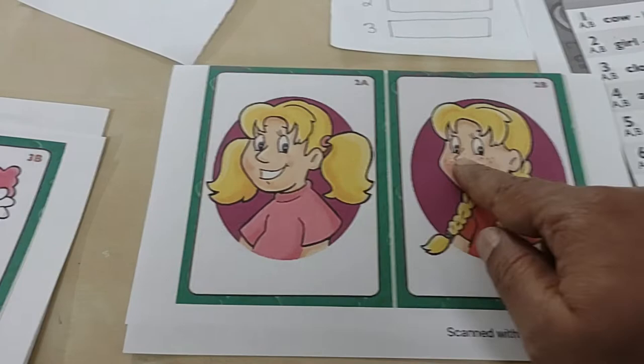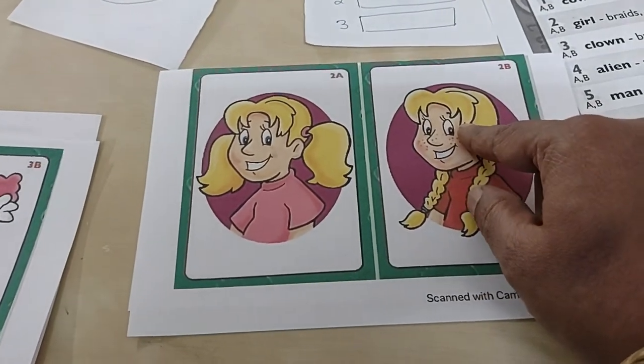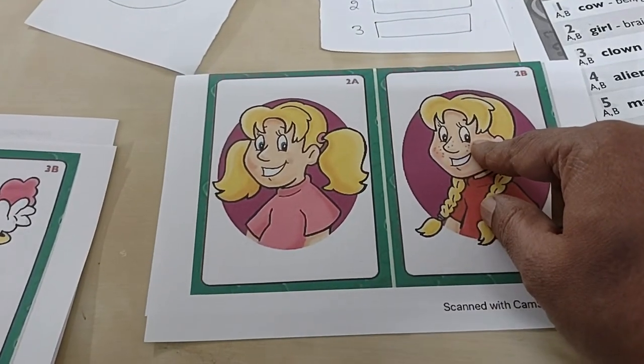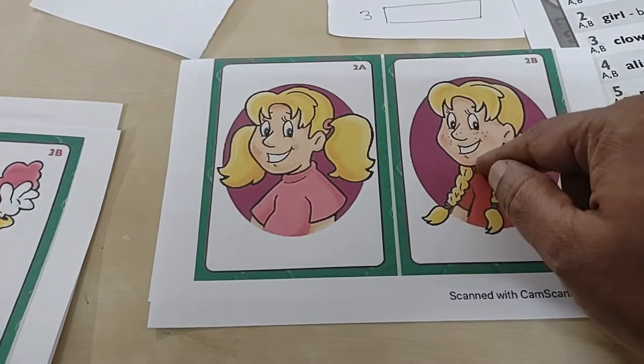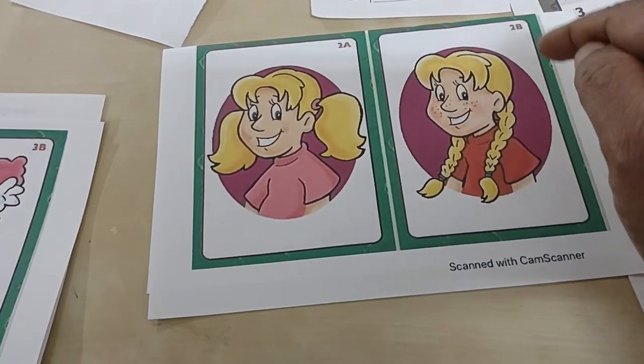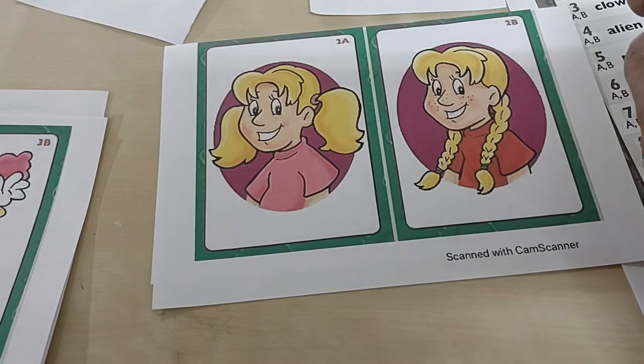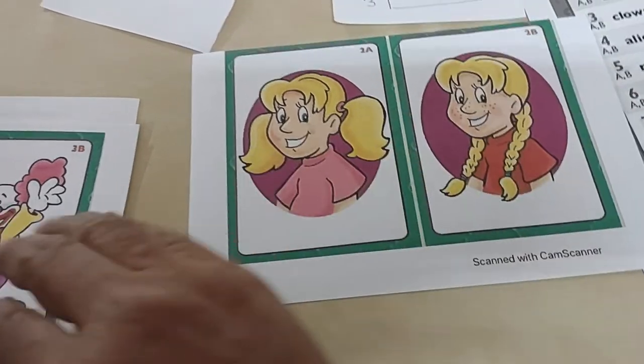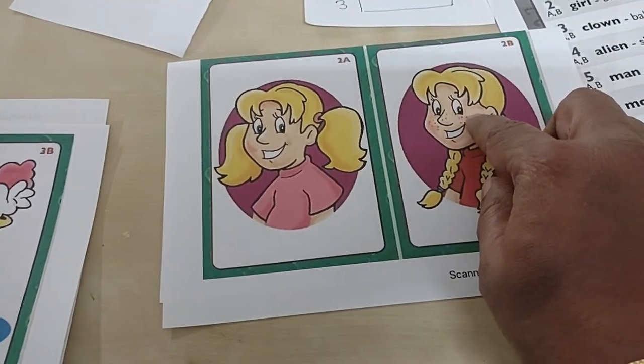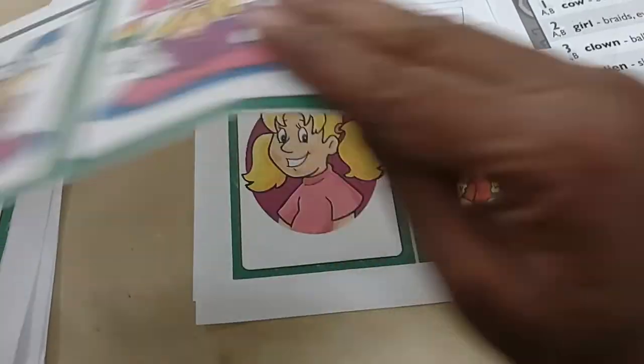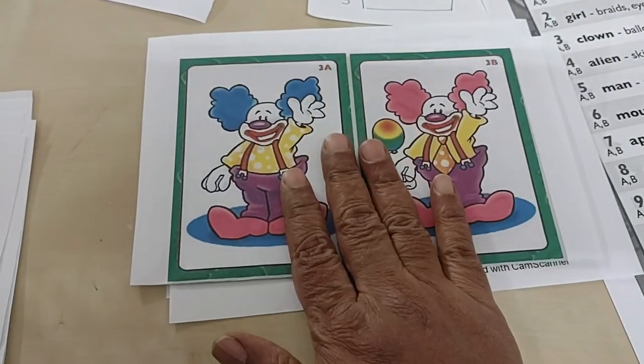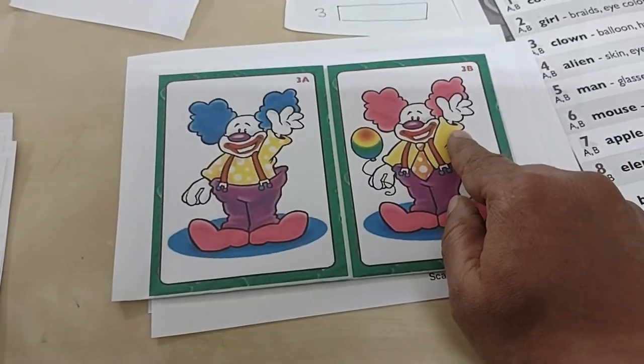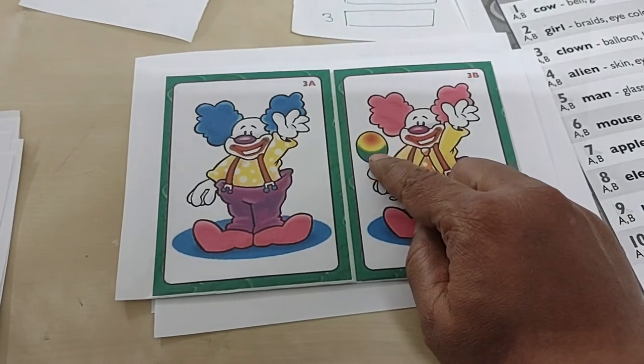Like here the next picture, how B is different. B girl has braids, B girl's eye color is blue, B girl is wearing a red shirt, B girl has freckles like these dots. Then the child will take a third picture. B clown has a balloon.